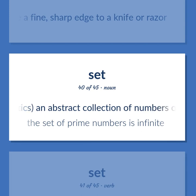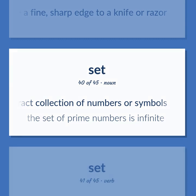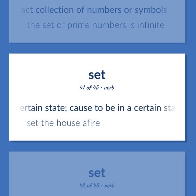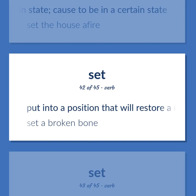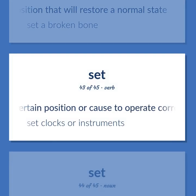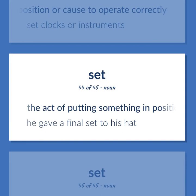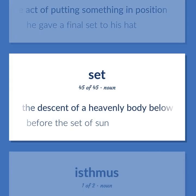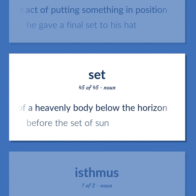Mathematics: an abstract collection of numbers or symbols. The set of prime numbers is infinite. Put into a certain state; cause to be in a certain state. Set the house afire. Put into a position that will restore a normal state. Set a broken bone. Set to a certain position or cause to operate correctly. Set clocks or instruments. The act of putting something in position. He gave a final set to his hat. The descent of a heavenly body below the horizon. Before the set of sun.